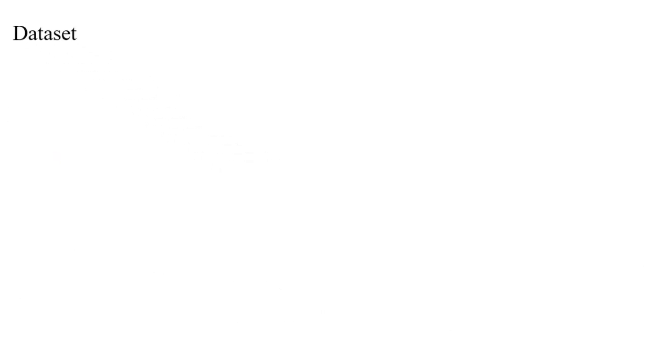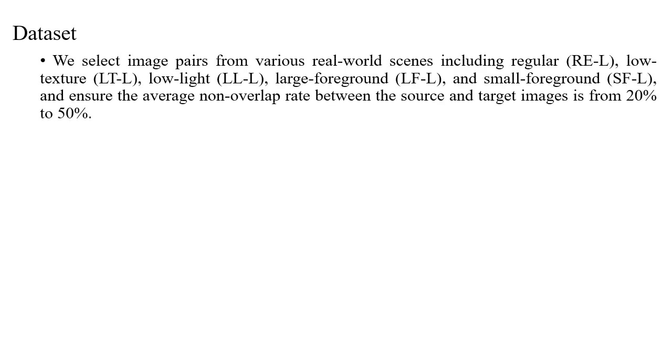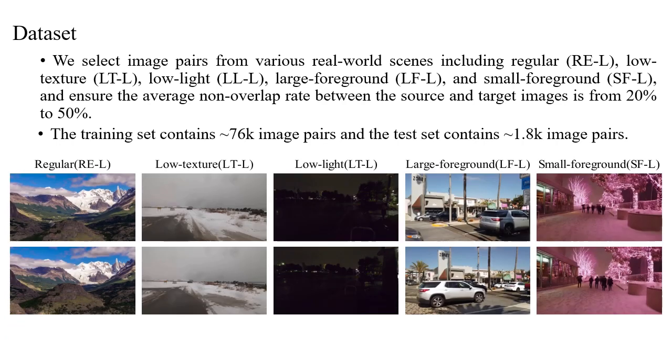To validate our method, a large-scale dataset is proposed, which contains five categories, including regular, low-texture, low-light, large-foreground, and small-foreground. We select 76K image pairs for training and 1.8K image pairs for evaluation, and ensure that the non-overlapped rate between the source and target images is from 20% to 50%. Some examples are shown below.